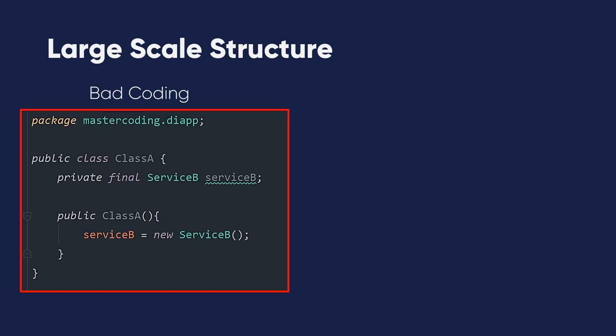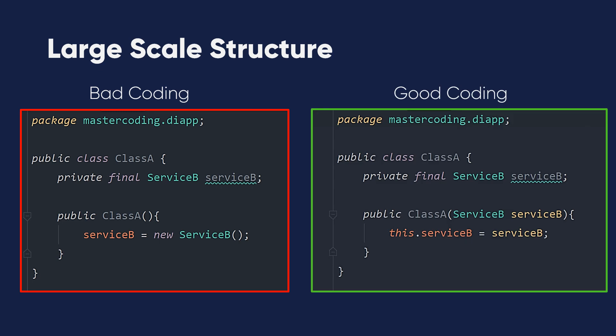Now let's move to a larger-scale structure. The bad coding pattern is instantiating a new object of a class or service directly inside the class. We learned that dependency injection — specifically the constructor injection way — means injecting Service B inside the constructor of Class A. This is the good coding pattern.